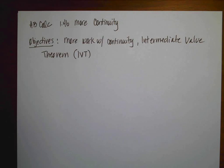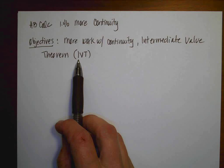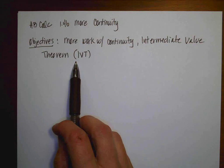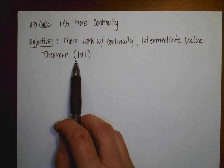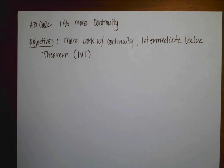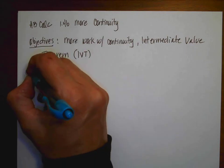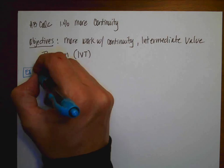Hello, math humans. We're going to do 1.4b today. We're going to be talking more about continuity. Our objectives are that we're going to continue our work with continuity, and then we're going to talk about the intermediate value theorem. This is going to be one of those theorems that you're going to need to add to your formula sheet to make sure that you have that information.